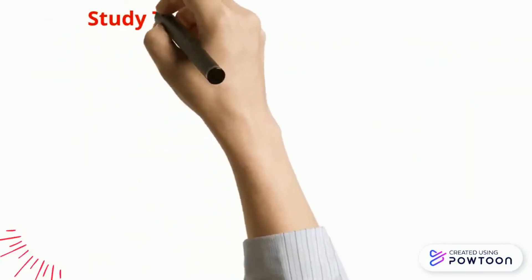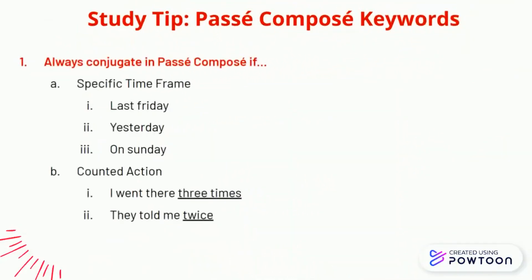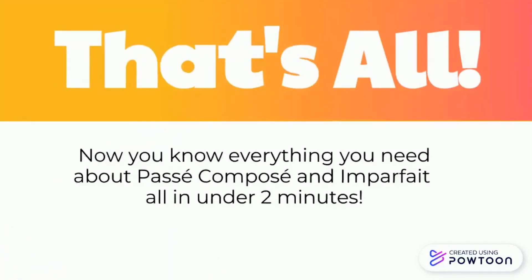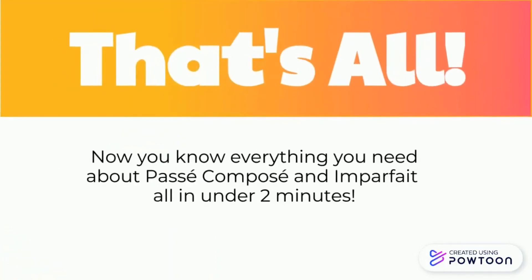Here's a study tip for passé composé. Always conjugate in passé composé if the phrase contains a specific time frame, because this indicates that the action is already completed. Or, always conjugate in passé composé if there's a counted action, such as I went there three times, or they told me twice. And that's all — now you know everything you need about passé composé and imparfait. Happy studying!